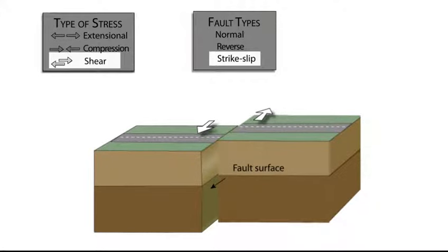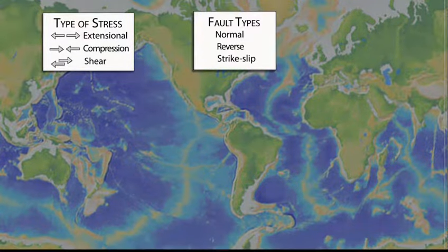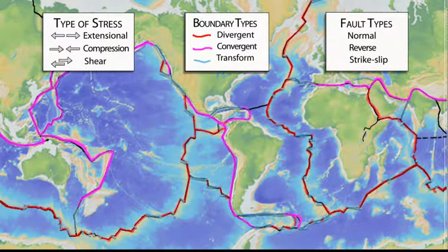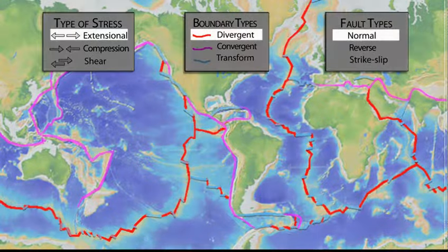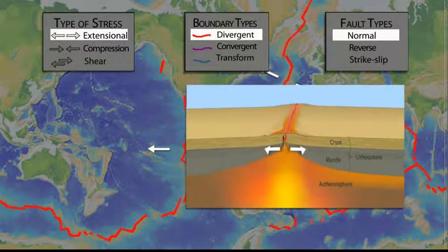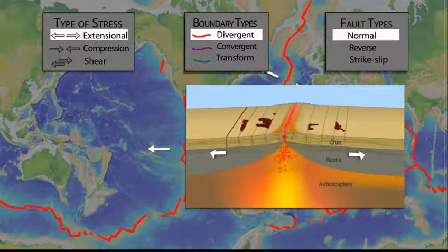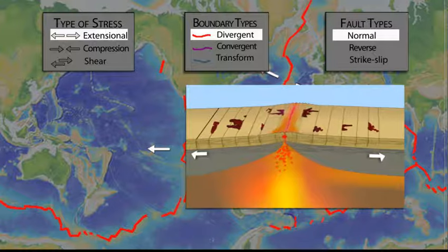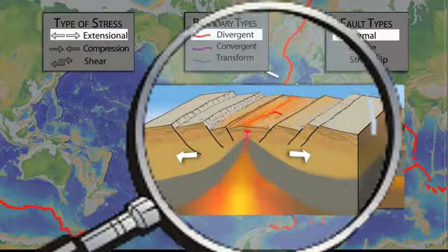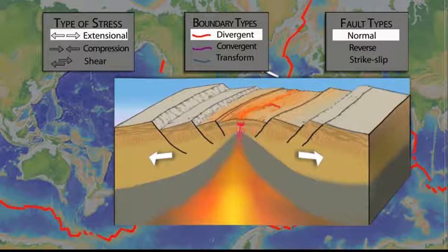Most strike-slip faults are close to vertical and involve little to no vertical motion. The stress regimes that act locally on faults also act at larger regional scales to create three basic types of plate boundaries. Extensional stress occurs at divergent plate boundaries where two plates move away from each other. Examples include oceanic spreading ridges that form the longest mountain ranges in the world. As the plates pull apart, hot and therefore lower-density mantle rock rises to support the 3,000 to 9,000-foot-high spreading ridges. As the plates move away from the ridge, they cool, become brittle, and break into normal faults.